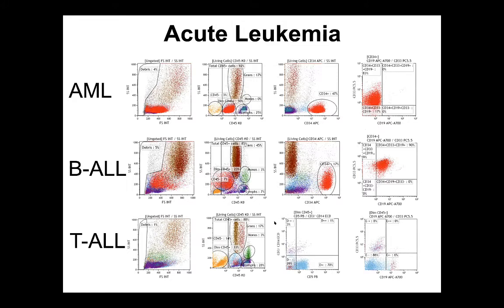Here are three examples. The first row is from an AML case. The BLAST population is around 50%; they are CD34 positive and CD33 positive, confirmed using our acute leukemia panel. The middle row is from a B-ALL case; the BLASTs are CD45 negative, bright CD34, CD19 positive with aberrant CD33.